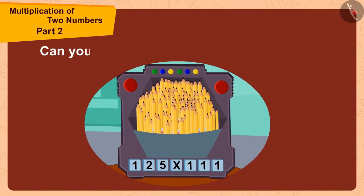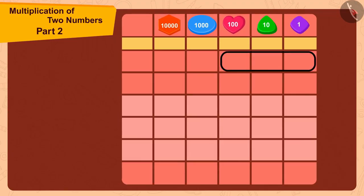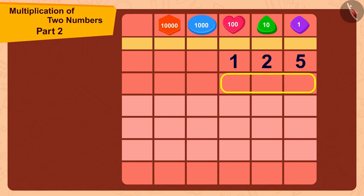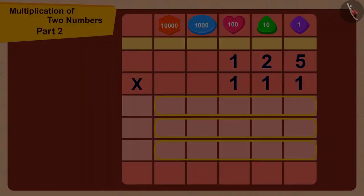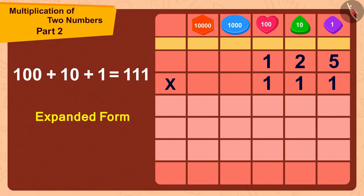Children, can you help Bholla to do this multiplication? Let's do this together. Here we are multiplying a three-digit number 125 with another three-digit number 111. So in how many steps can we do this? That's right, three steps. We can write 111 in the expanded form by adding 1 and 10 to 100.